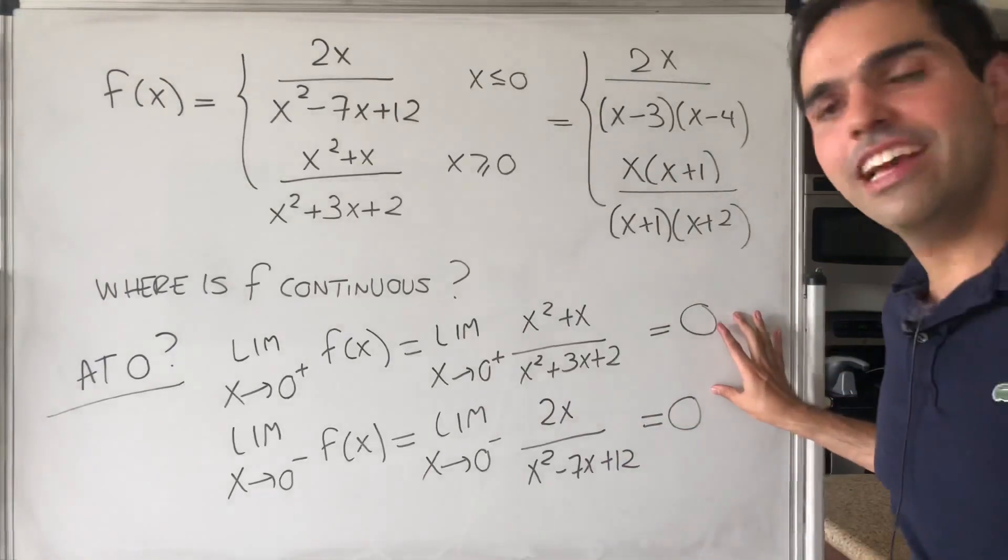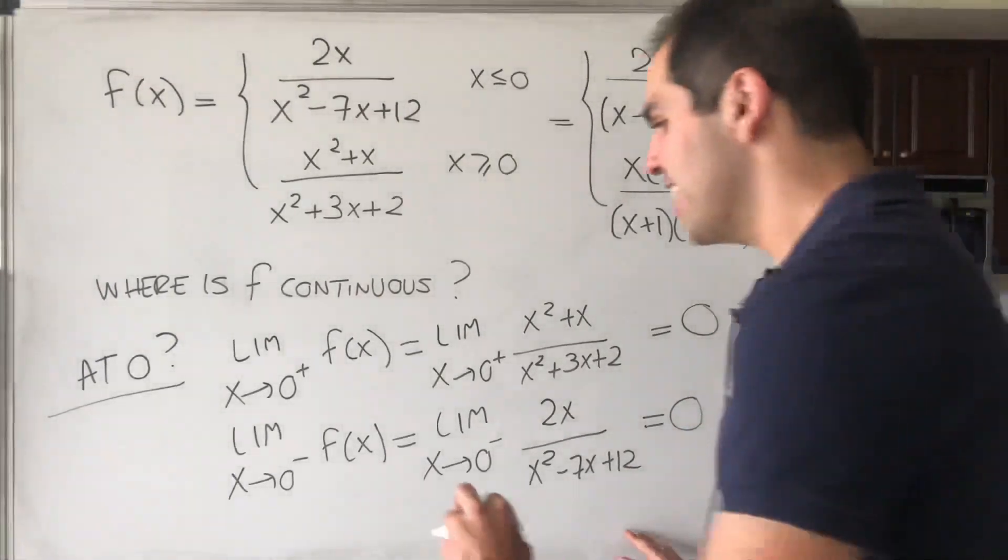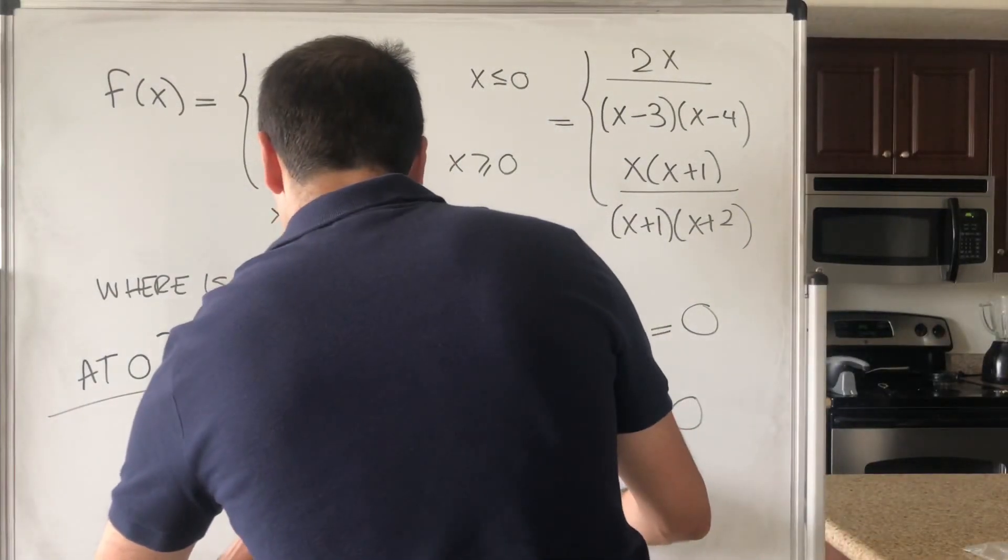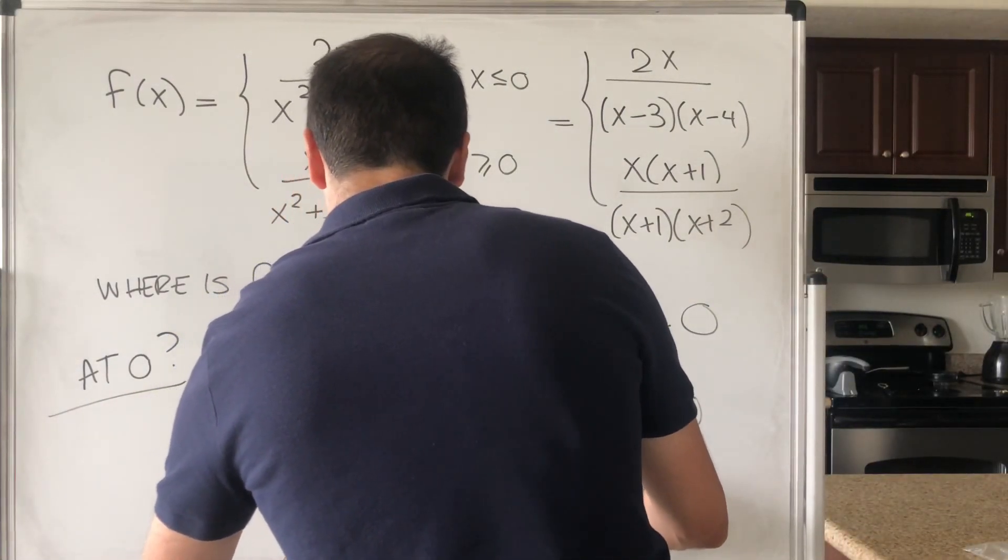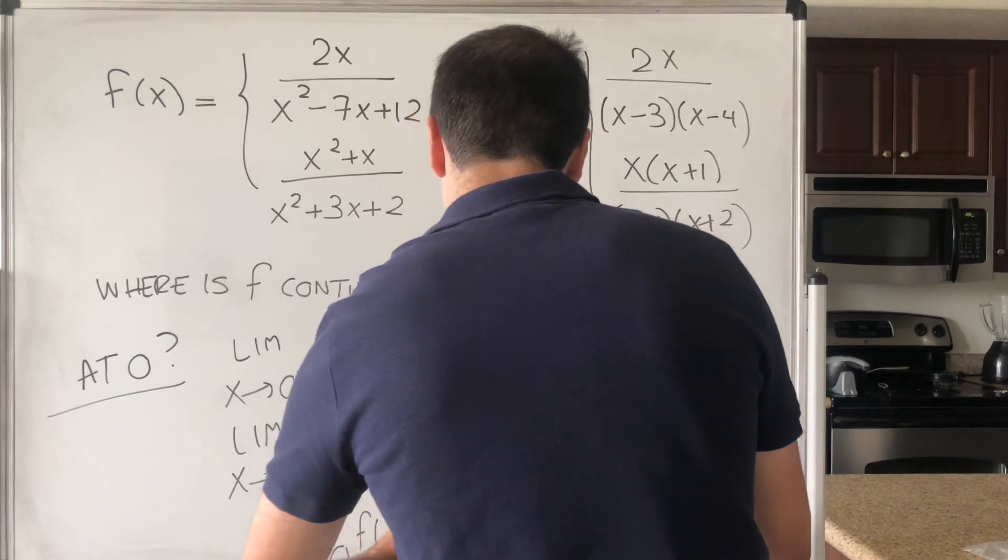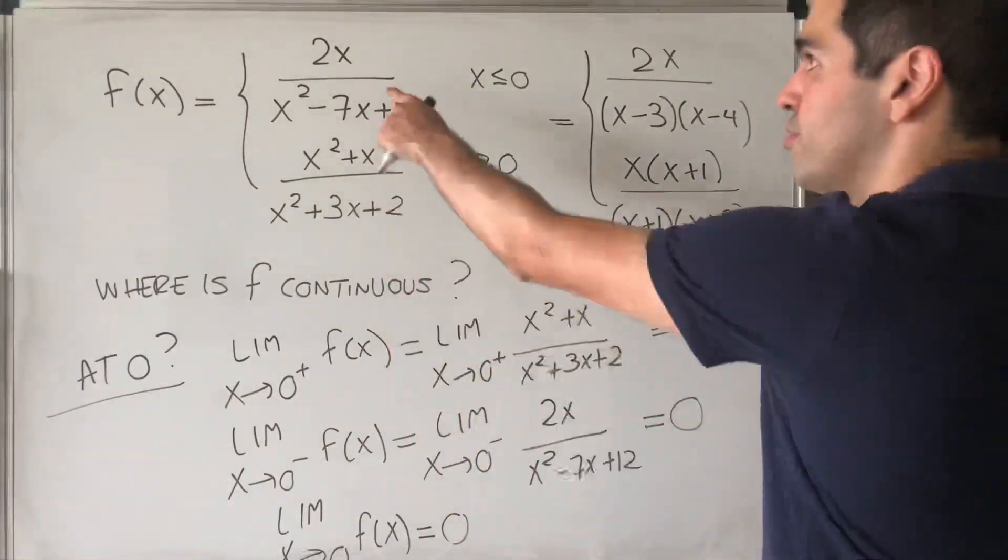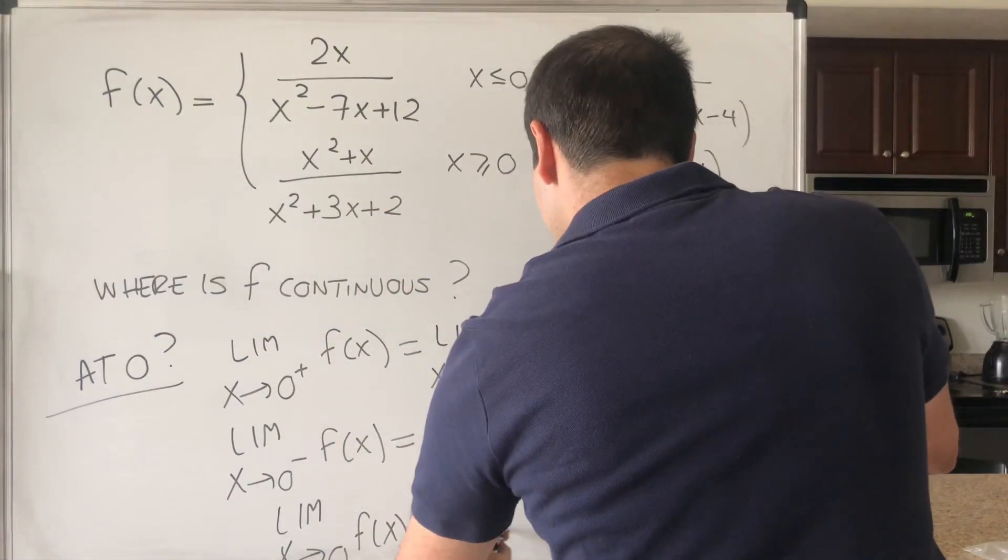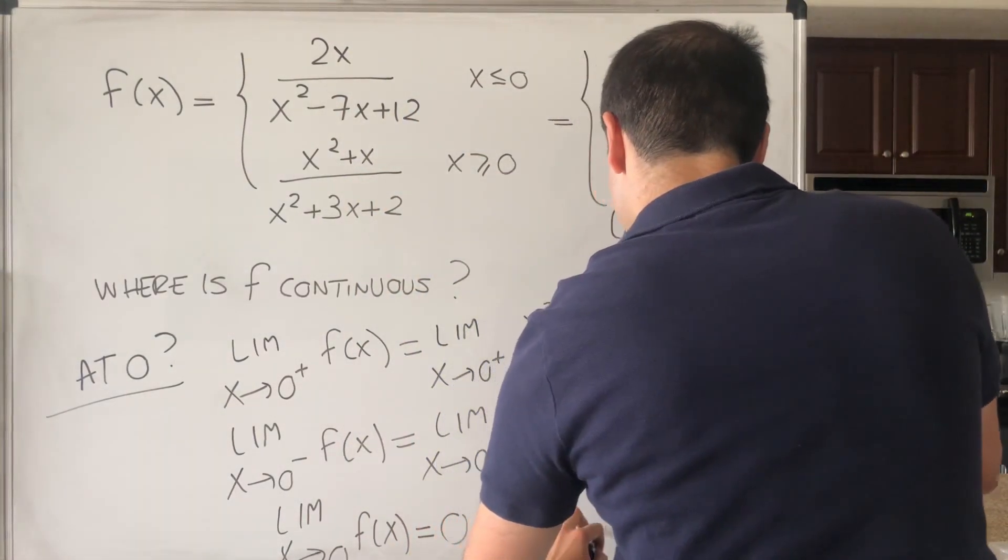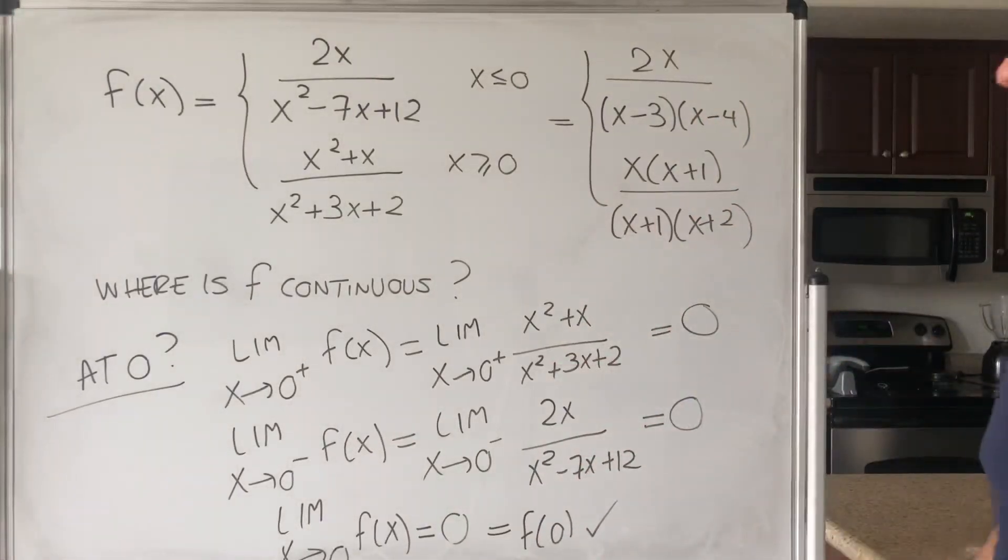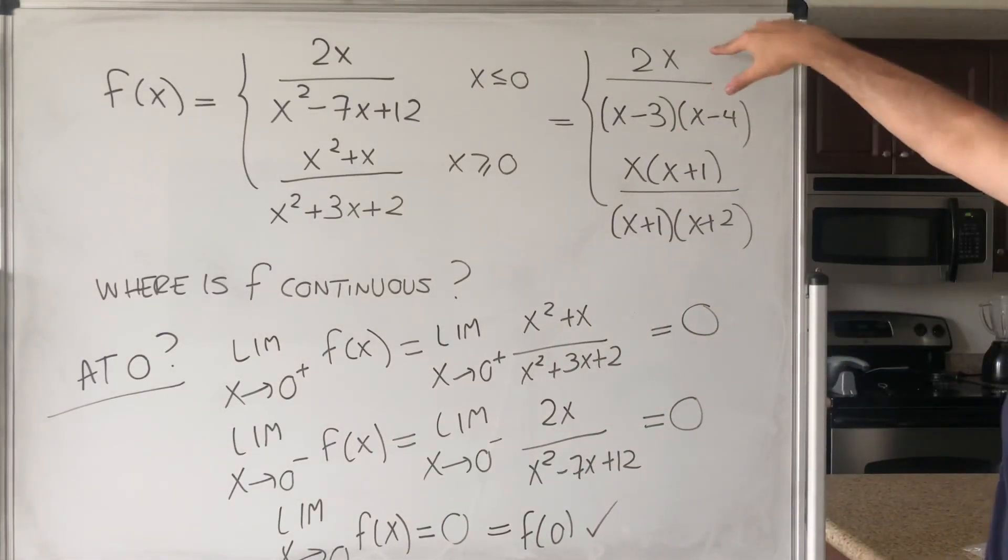So in fact, since the left-hand side and right-hand side limits are equal, we can conclude that the limit as x goes to 0 of f of x is 0, which is also the value of f at 0. So f of 0, you can compute it anyway, and that is f of 0. So in fact, it is continuous at 0, but the question is, what about the other points?